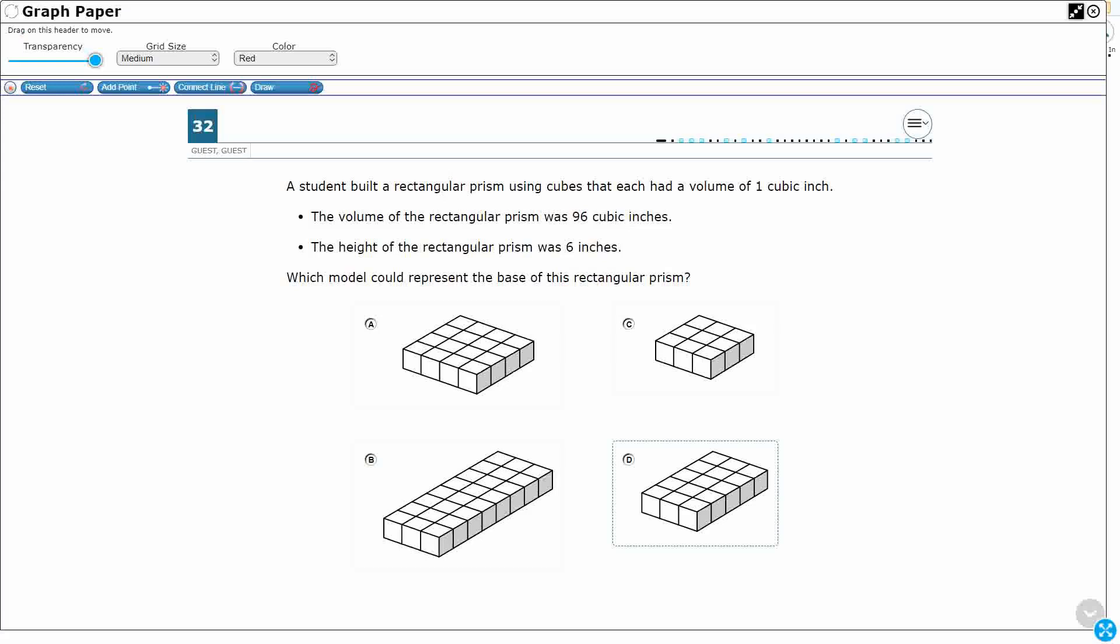So we'll use either of those. And it looks like it's probably going to be better for us to do V equals BH. Simply because, look, they give us the volume. So V equals 96. They give us the height. Height equals 6.